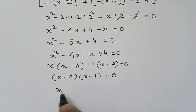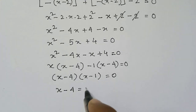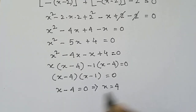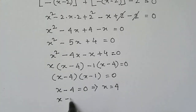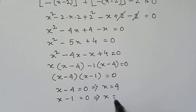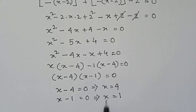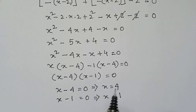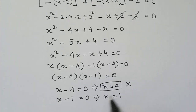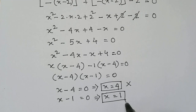From here, x minus 4 equals 0 implies x equals 4, and x minus 1 equals 0 implies x equals 1. Now we considered in this case that x minus 2 is less than 0, so x equals 4 is not an answer, and x equals 1 will be the answer.